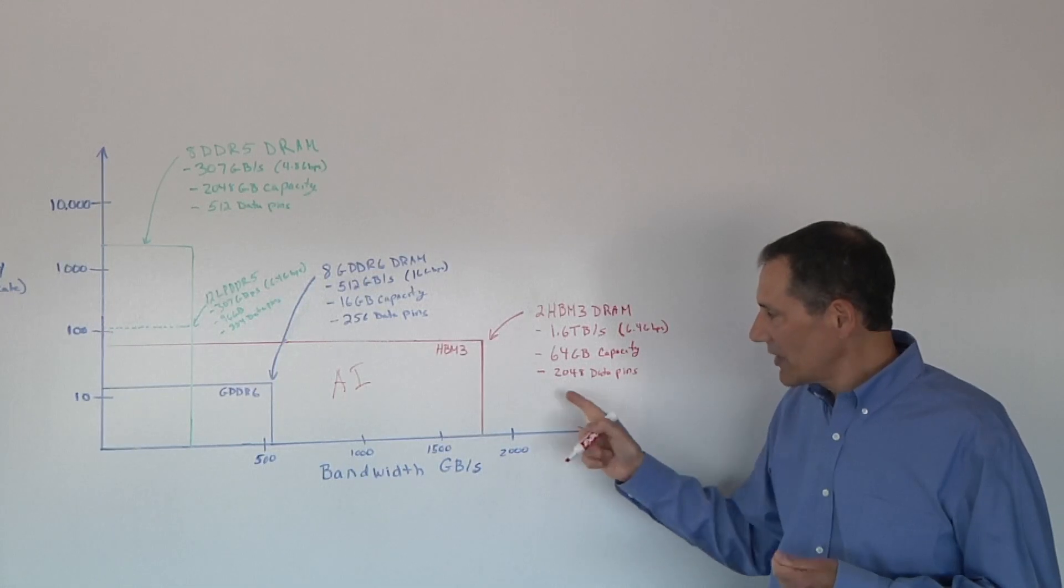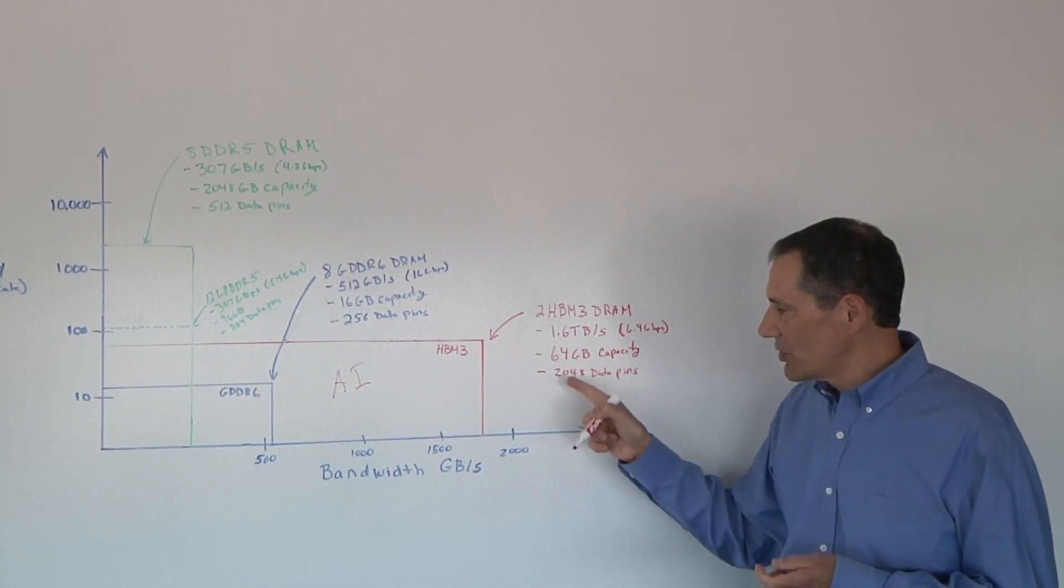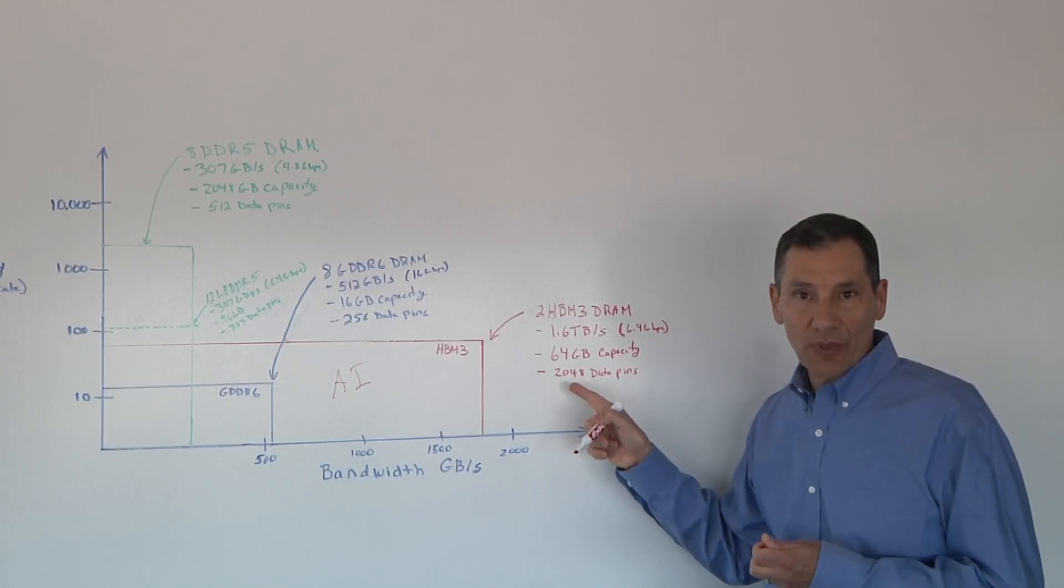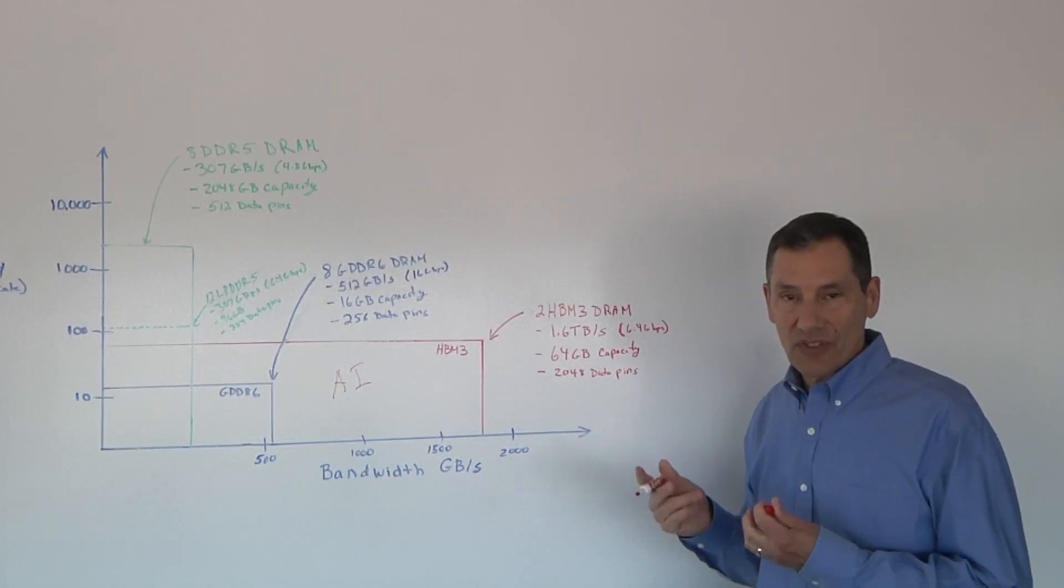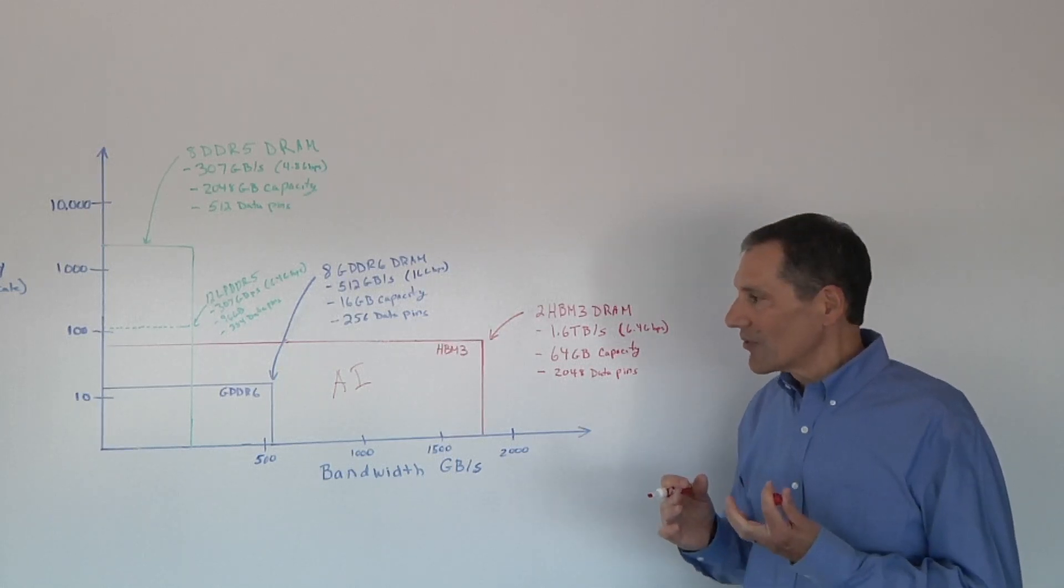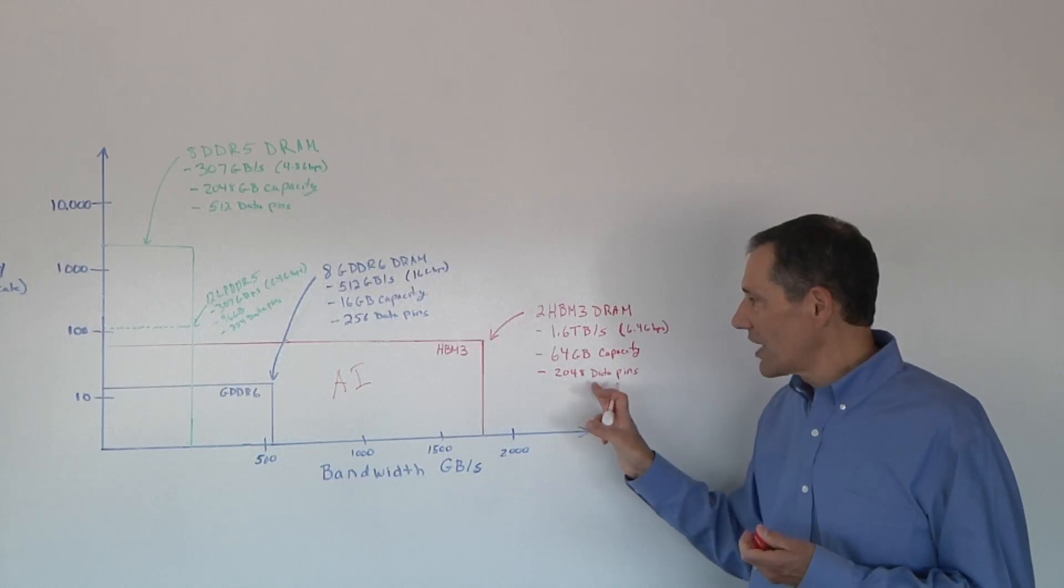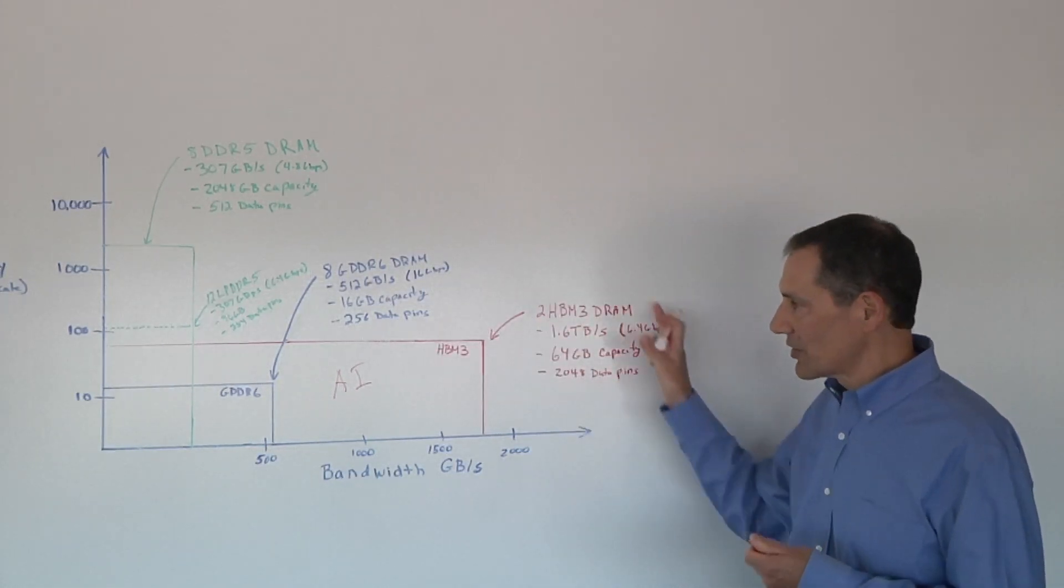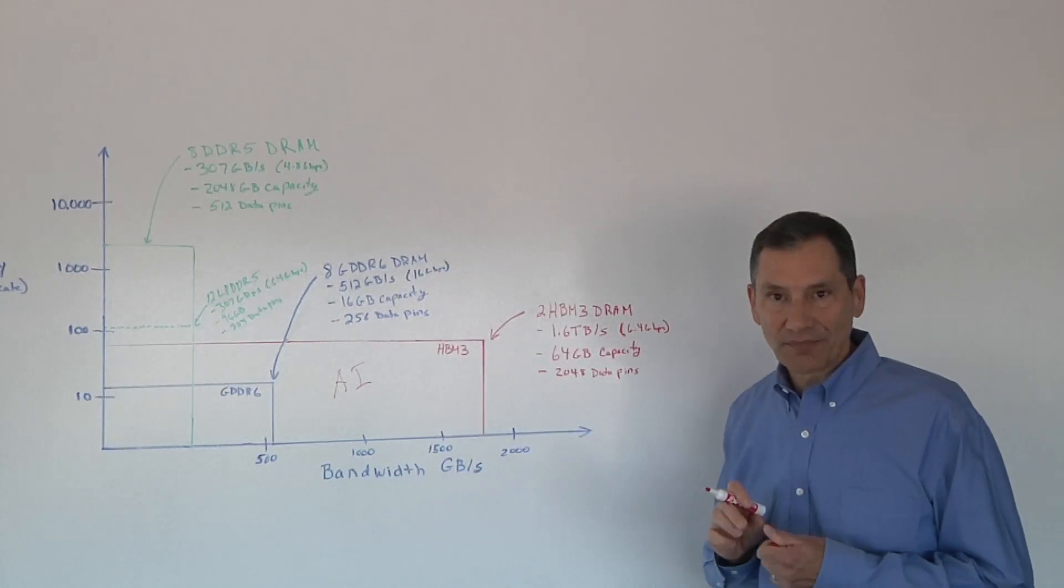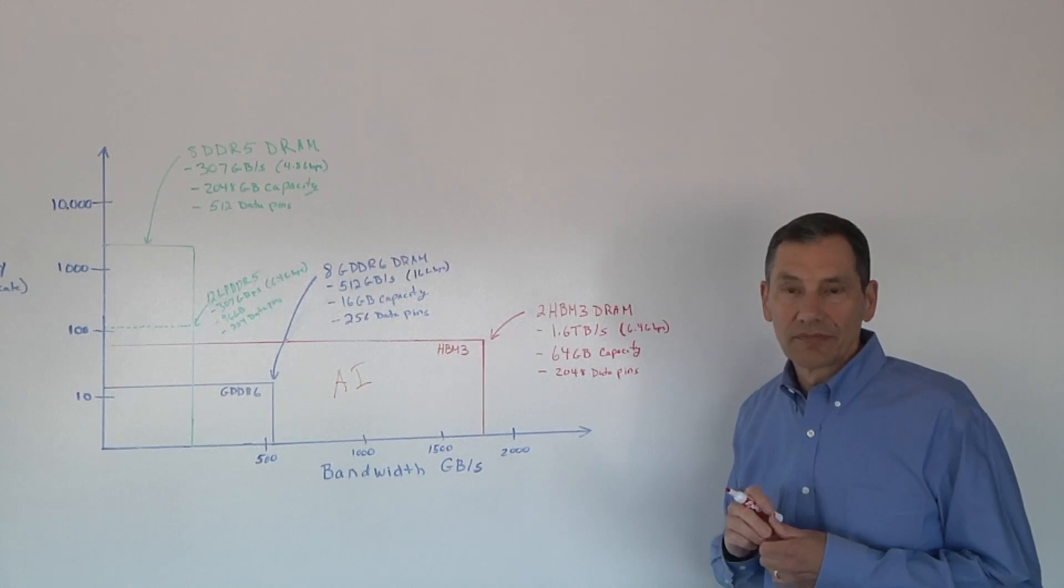But you have a lot of pins to deal with. With HBM, in this case, 2,024 pins per DRAM. So you have to deal with all those pins. So as you said, you call them power users. If I'm doing an AI training algorithm, I'm going to need terabytes of memory bandwidth performance. And so I'm going to be willing to build a system that can accommodate HBM.